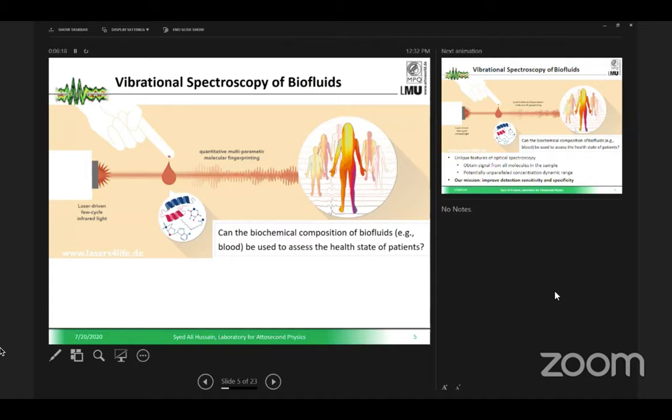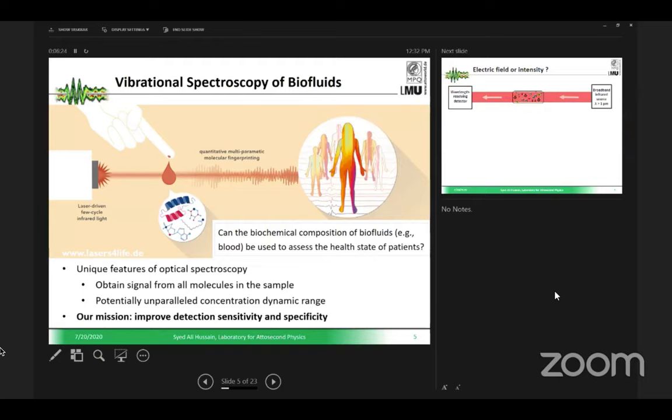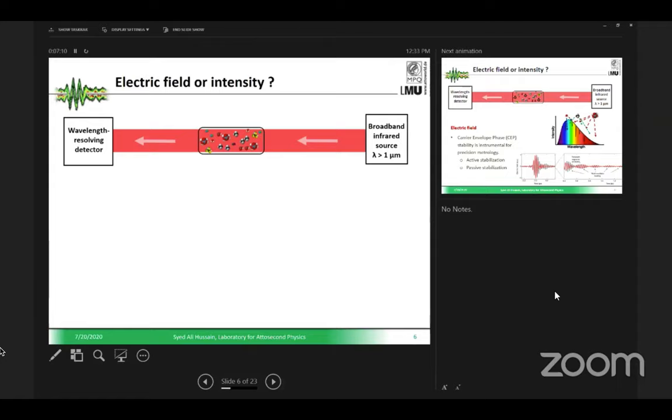This is our group, which is focused on biomedical applications, and my group is specific towards laser development. What we in the laser group want to do is build up a source which can provide broadband and very stable electric field of light, and this electric field should be detected with a high dynamic range. It is unparalleled, which is demonstrated anywhere in the world, at least with these specifications. We just want to improve the detection sensitivity and specificity.